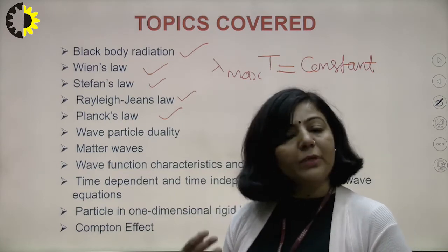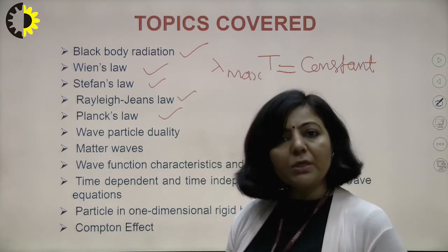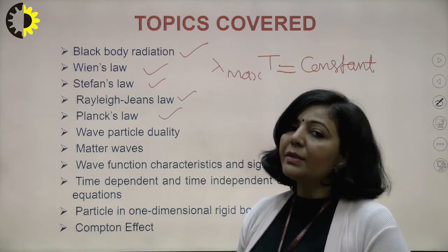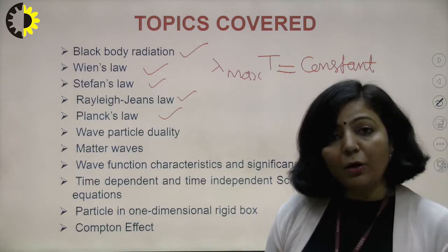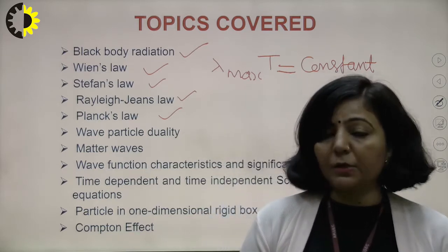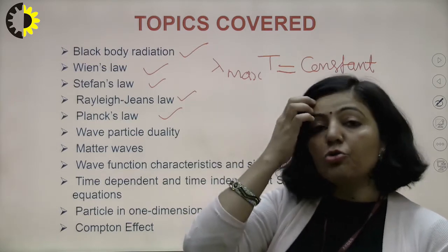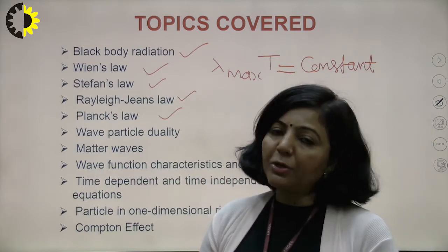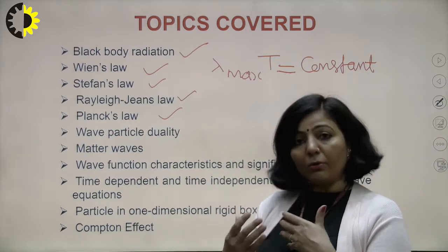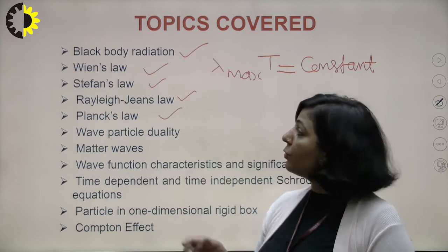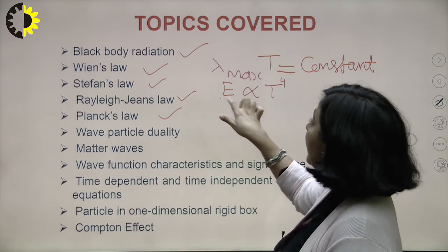The second outcome is Stefan's law. According to Stefan's law, the energy radiated per unit area per unit time by a perfectly black body is directly proportional to the fourth power of temperature. This law is very important for finding the temperature of astronomical objects — you can find the temperature of a star using Stefan's law. Mathematically, E is directly proportional to T raised to power 4.